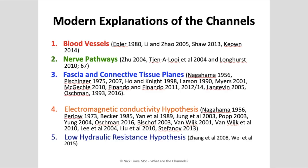Today we're going to look at the first three hypotheses: blood vessels, nerve pathways, and fascia and connective tissue planes. We're going to look at the anatomical correlations between these systems and tissues and the channels of Chinese medicine. I'm also hoping to discuss the other two hypotheses in a separate lecture, so please keep your eyes open for that on my YouTube channel and website.